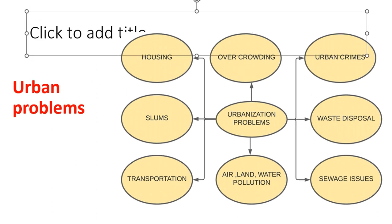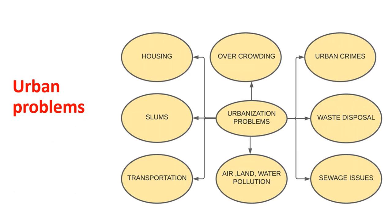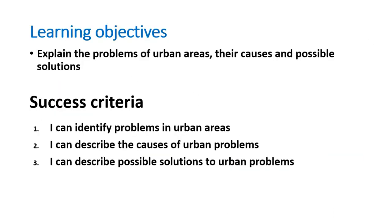Let's look at urban problems - this should be lesson number six. Some of the major problems around urbanization are housing problems, creation of slums, transport problems, overcrowding, urban crime, waste disposal, sewage issues, and air, land and water pollution. Those are the urban problems, but let's look at them in detail - their causes and possible solutions.